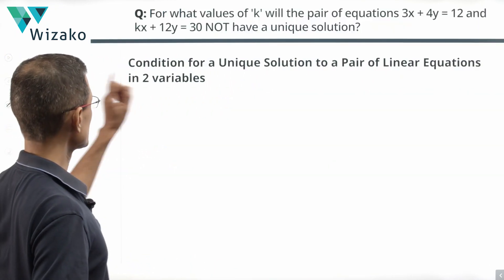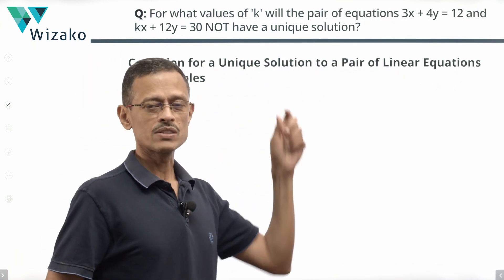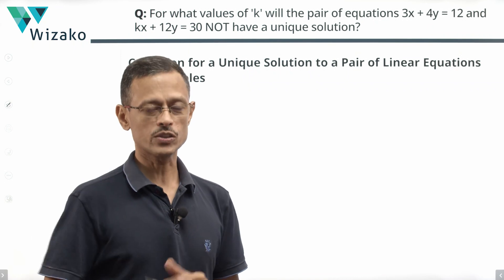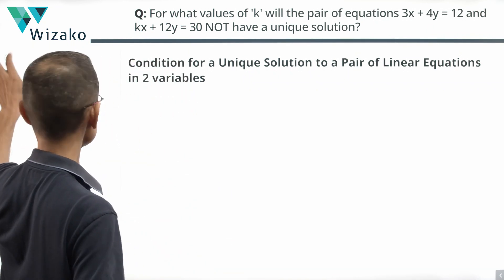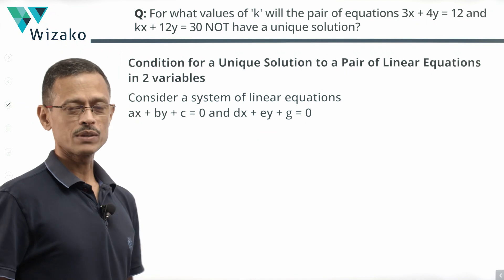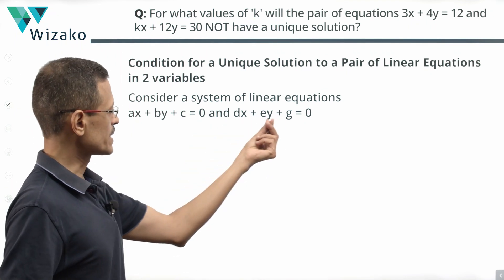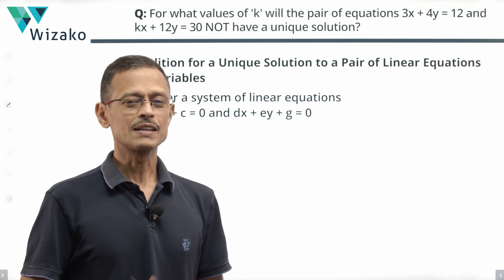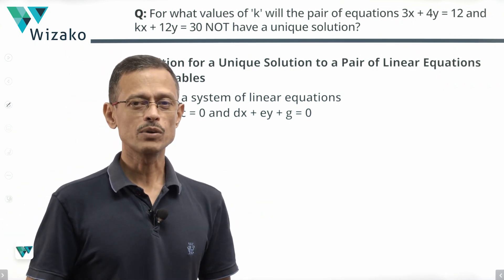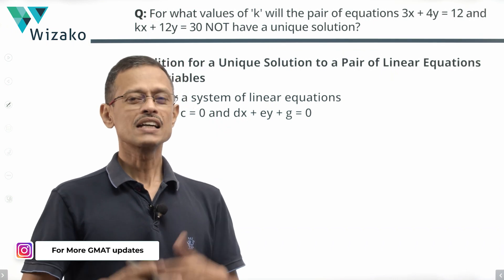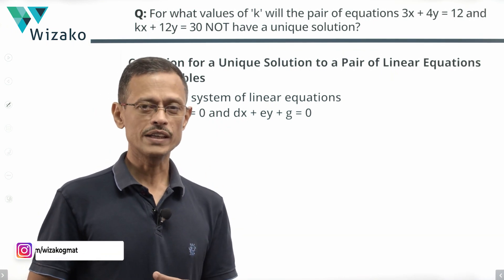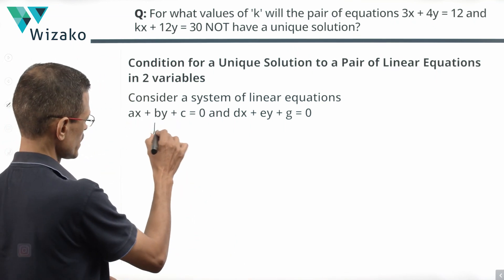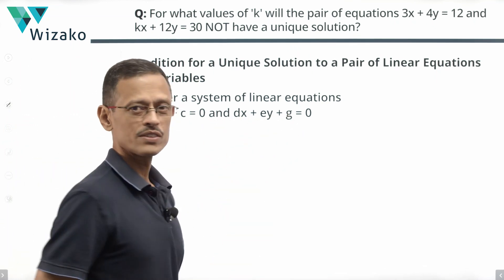We're going to derive the condition for the opposite first. Let's consider two linear equations in the generalized form: ax + by + c = 0 and dx + ey + g = 0. What will a linear equation in two variables look like when plotted on an x-y plane? The graphic representation of a linear equation in two variables is essentially a straight line. So ax + by + c = 0 is a straight line — let's call it L1.